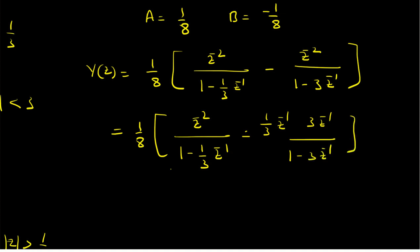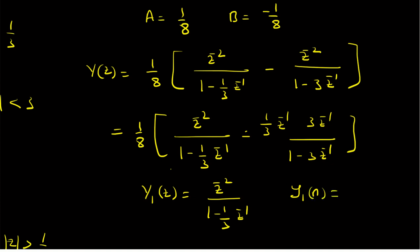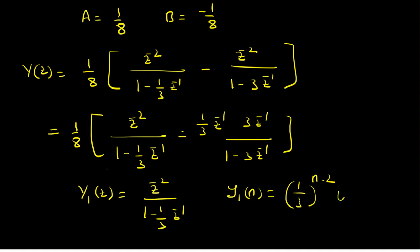Let Y1 of Z equal Z power minus 2 over (1 minus 1 by 3 Z inverse). Then Y1 of n is a delayed version of the inverse Z transform of 1 by (1 minus 1 by 3 Z inverse), which is 1 by 3 power n times U of n. With the Z power minus 2 delay, Y1 of n equals 1 by 3 power (n minus 2) times U of n minus 2 — an additional delay of 2 points.